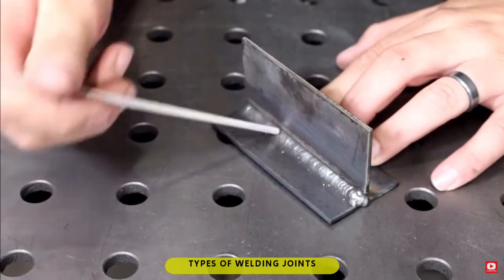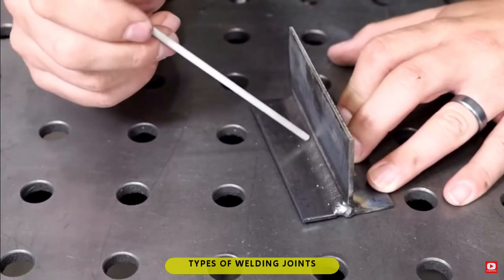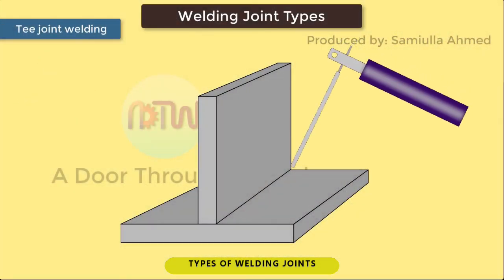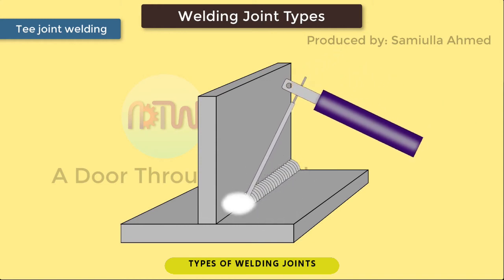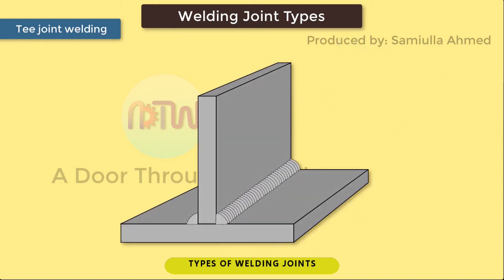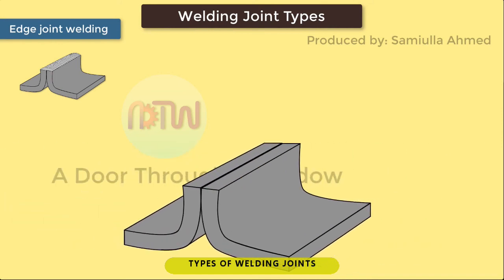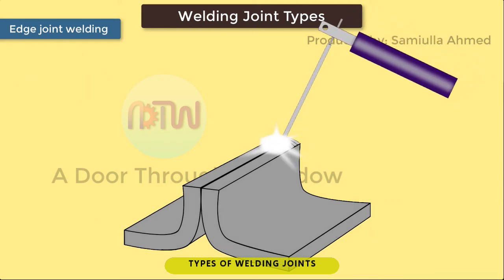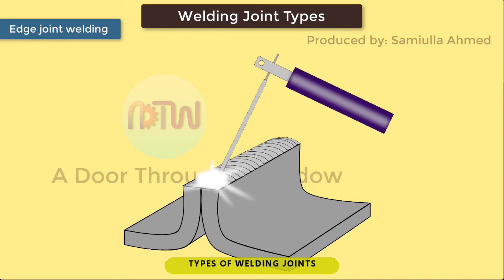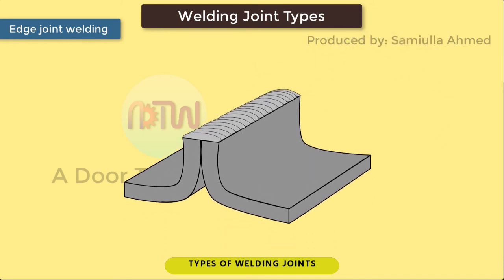4. T-joint: a welding of two pieces of perpendicular metal by means of joining the end of one metal perpendicular to the mid-span of the other, forming a T-shape connection. 5. Edge joint: a welding of two pieces of parallel metal attached side by side by means of joining their end-edges together at a certain length, in which one or both plates may be bent at an angle.